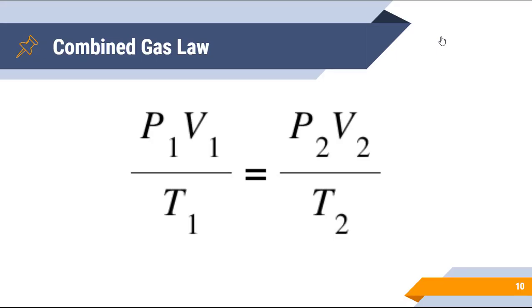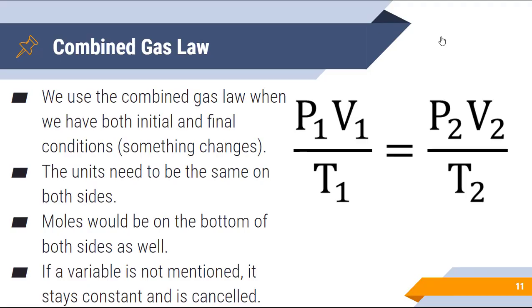What we end up with when we combine all these variables and look at whether they are directly or indirectly proportional is we get the combined gas law, where P1 times V1 over T1 equals P2 times V2 over T2. This plays a really important role when we start looking at different combinations of gases and how they behave. The key thing to keep in mind here is that all of these variables need to be the same on both sides of the equation. Pressure needs to be the same, volume needs to be the same, temperature also needs to be in Kelvin, which we'll talk about here in just a moment.